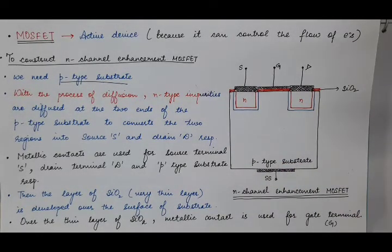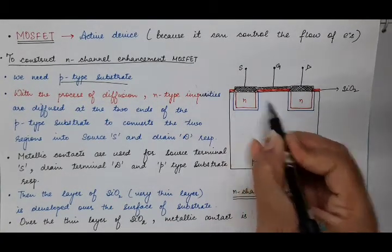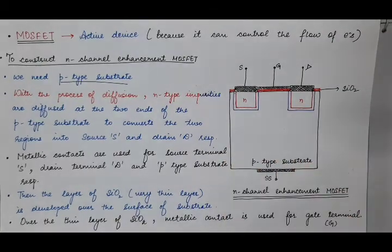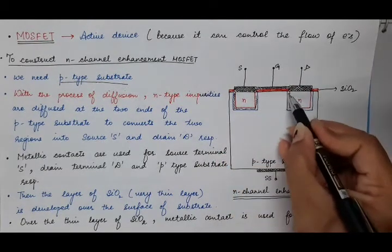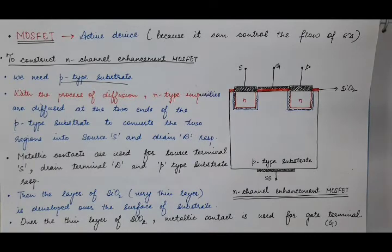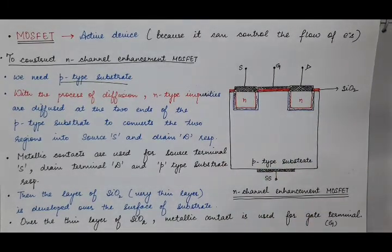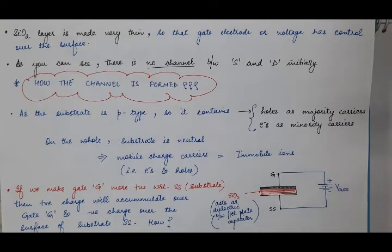Now we will see how this channel between the source and drain is formed. When we have diffused these N-type regions into this P-type substrate, a P-N junction is formed. These are the depletion layers of those two P-N junctions, which are formed between these N-type regions and the P-type substrate. Initially, when there is no biasing voltage between the gate and the substrate, there is no channel.